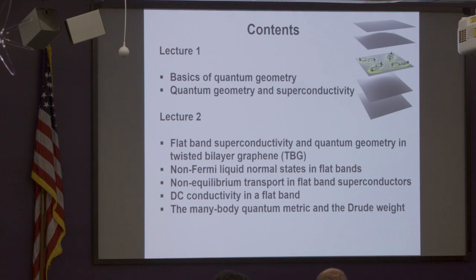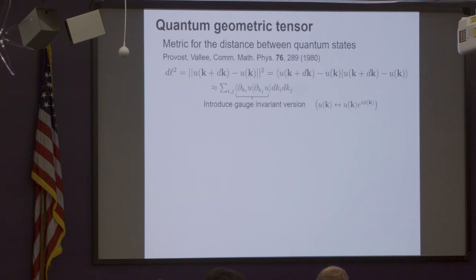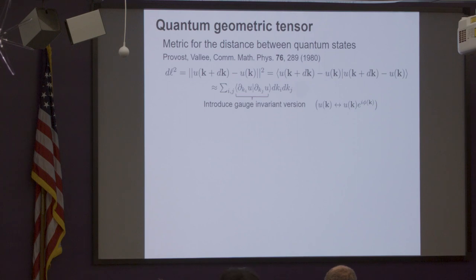So I start with basics of quantum geometry. This might be trivial to many of you, but I think everybody should have this in mind to be able to follow my lecture. So geometry means here something like why Helsinki is a very popular airport.